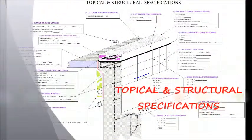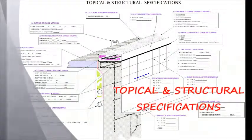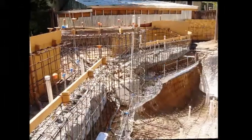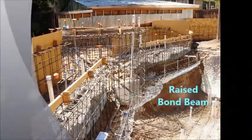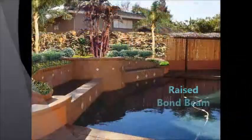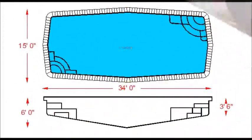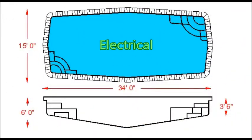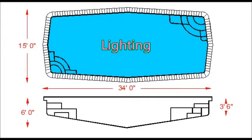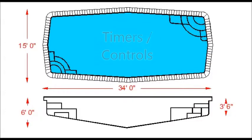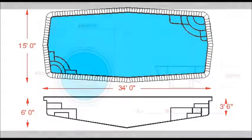Plans should exhibit all of the specifics required for a proper installation. Besides showing the dimensional relevance of the pool and/or spa in proportion with the space available, a properly prepared plan should provide direction for the plumbing, electrical, lighting, and control and automation system infrastructures.